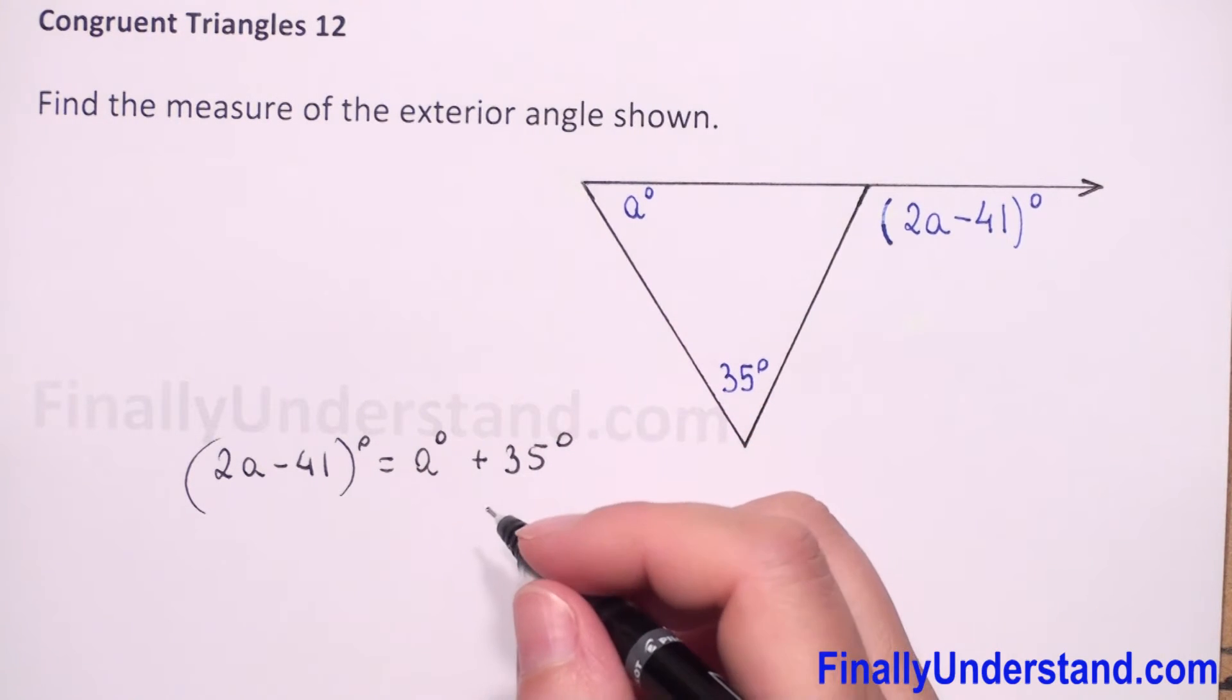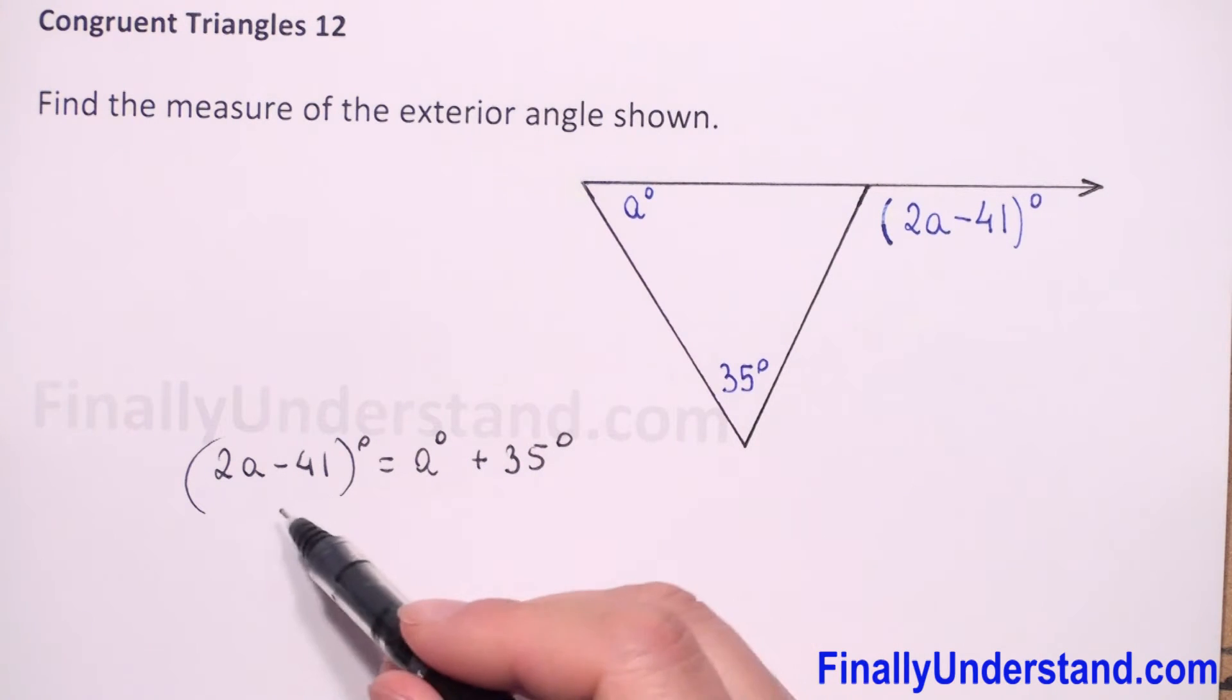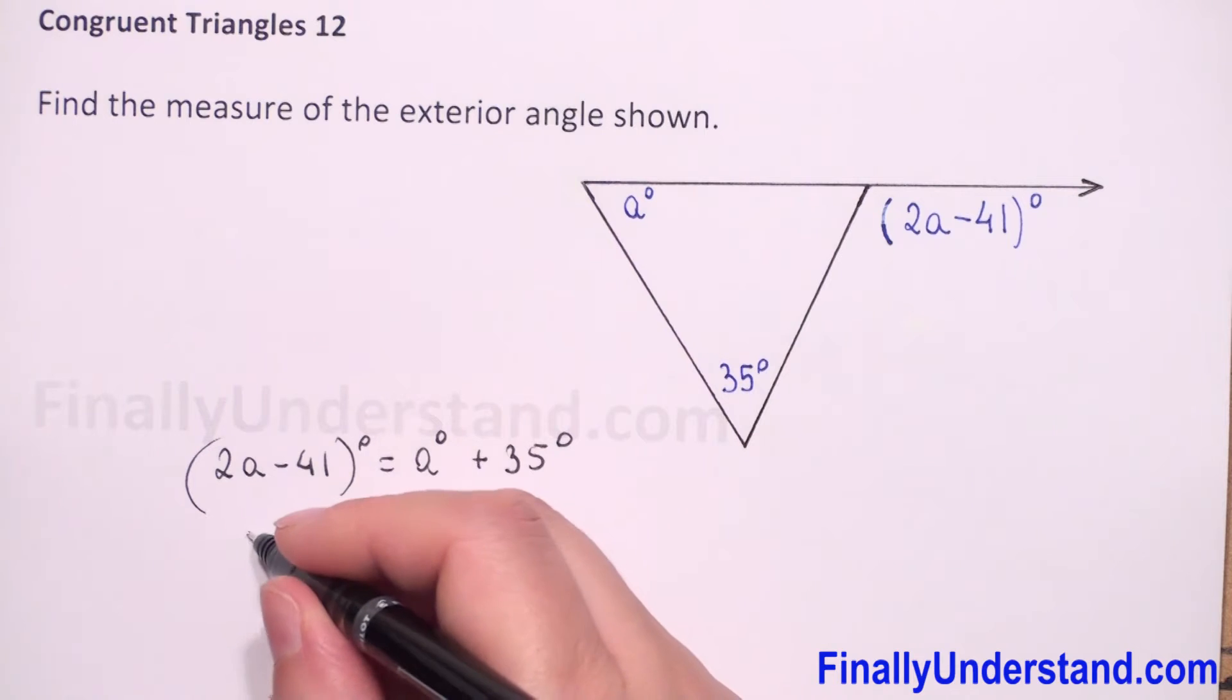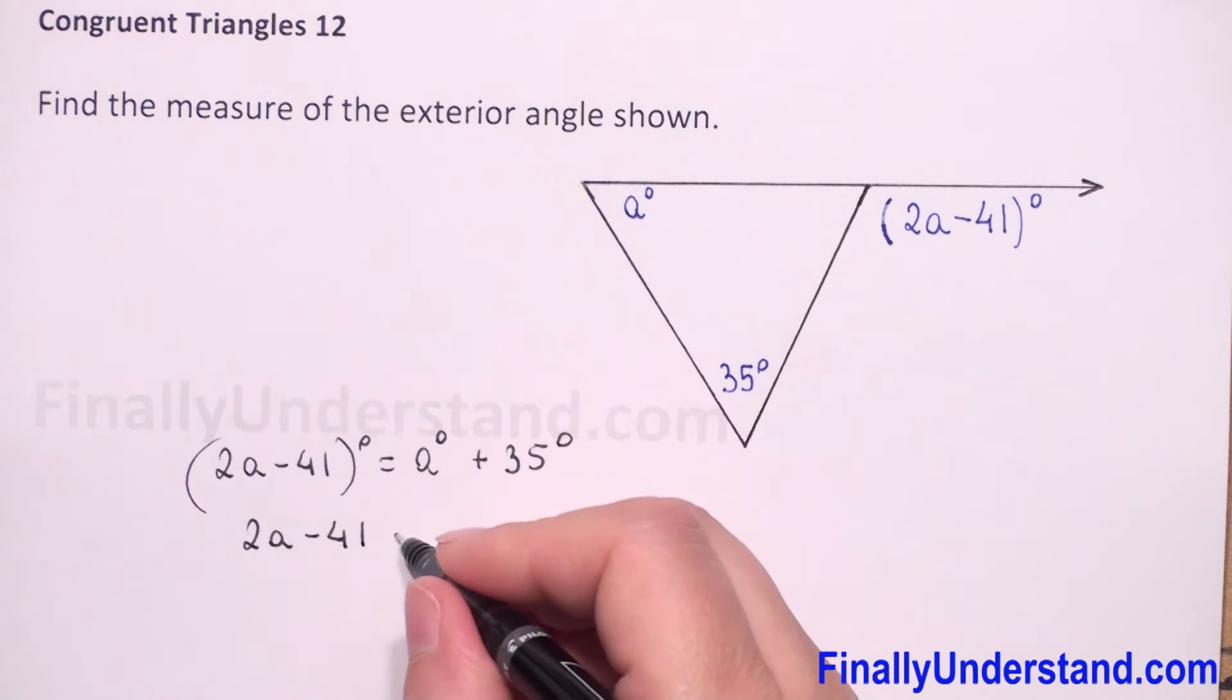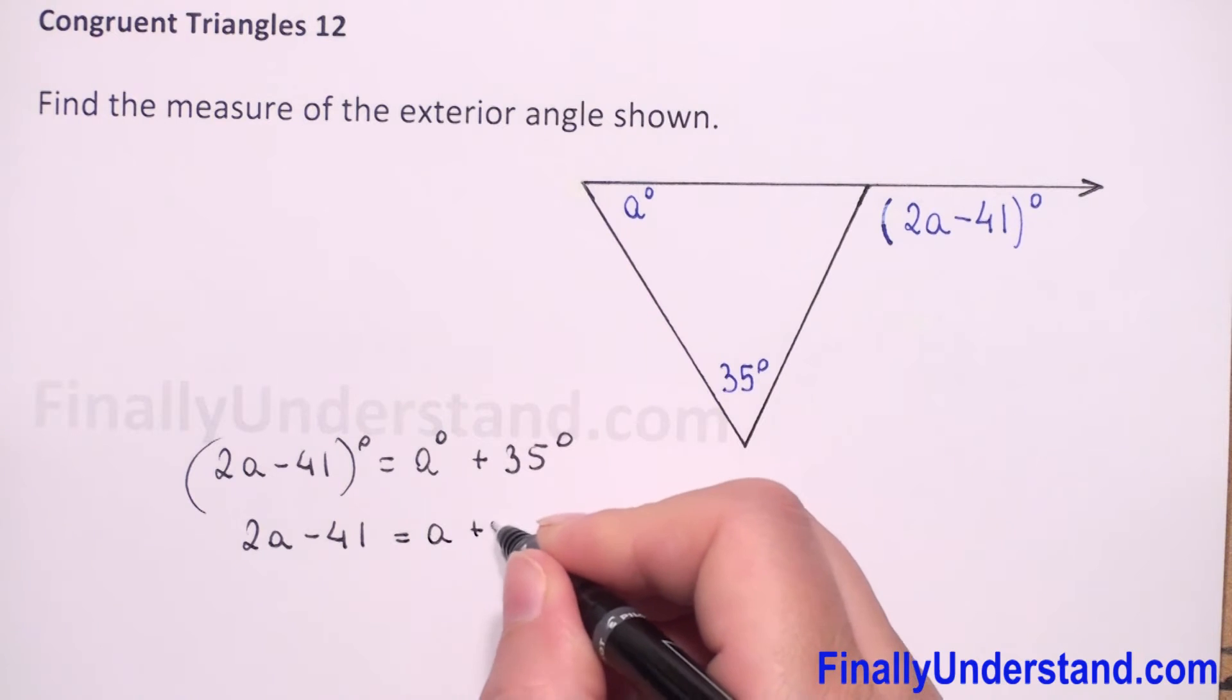Let's forget about degrees. We will solve our equation for a now, so we have 2a minus 41 is equal to a plus 35.